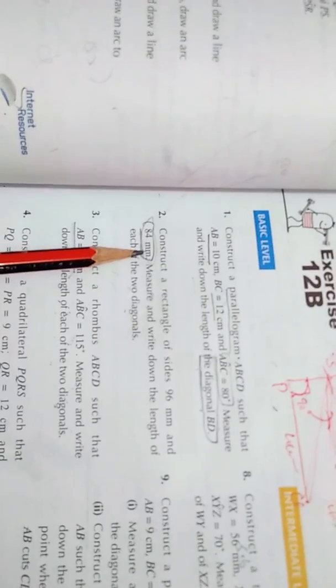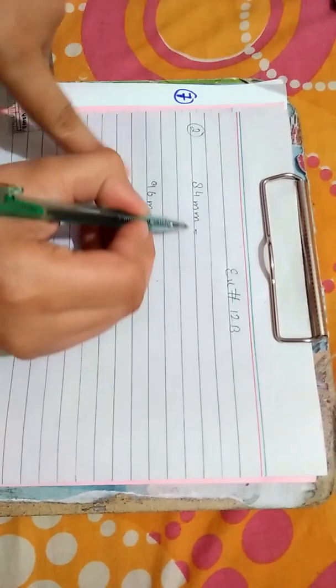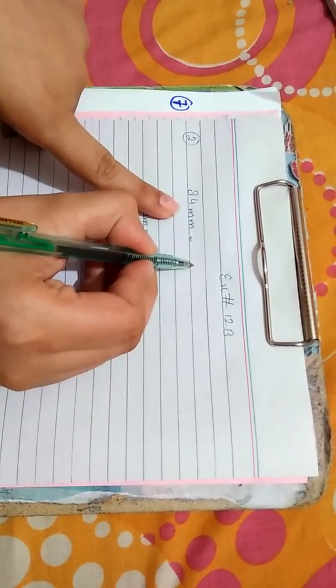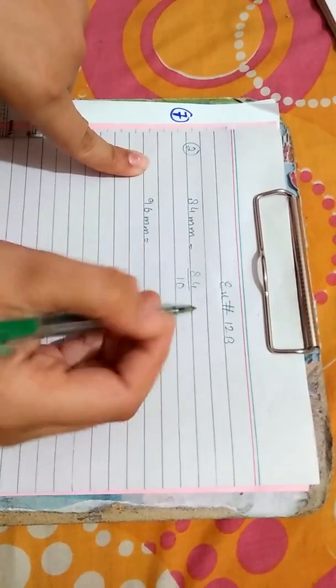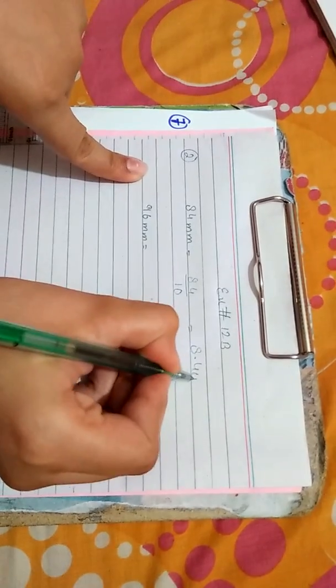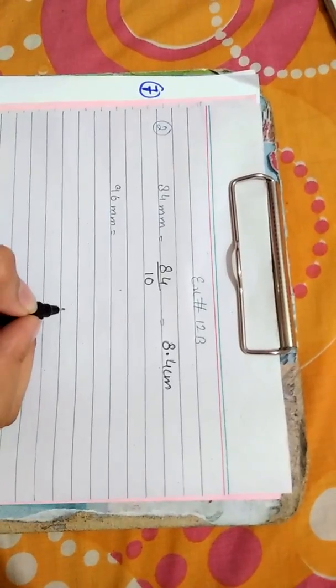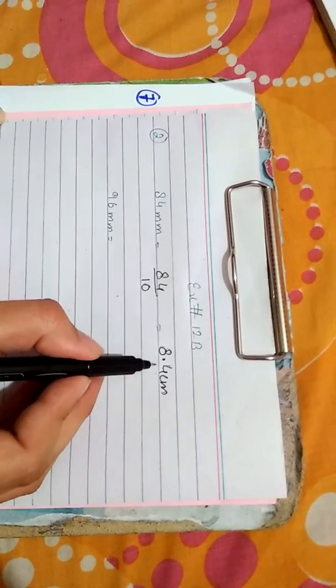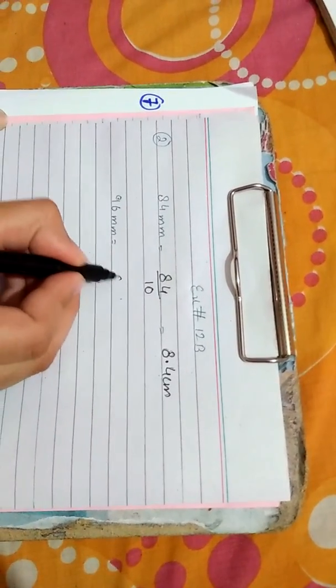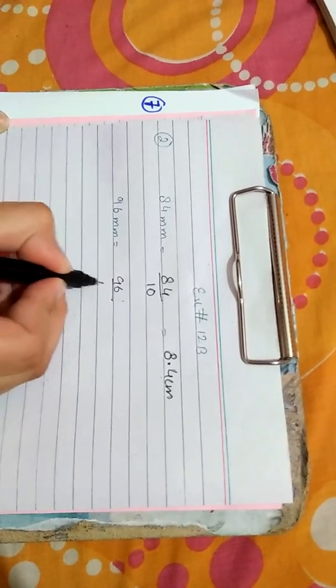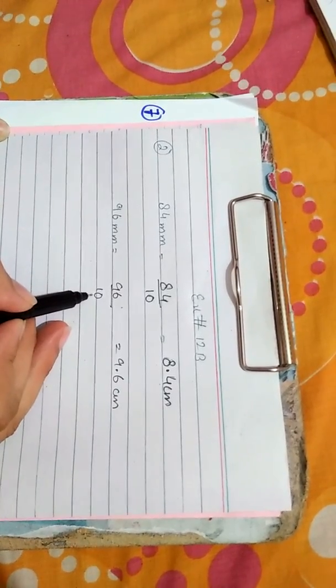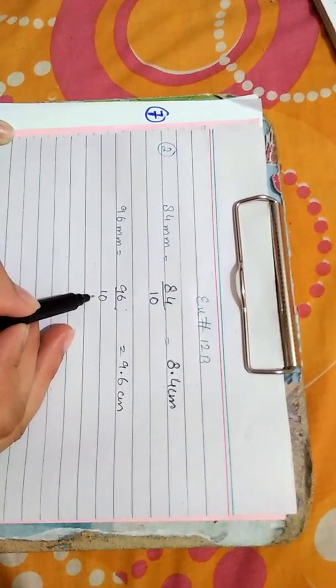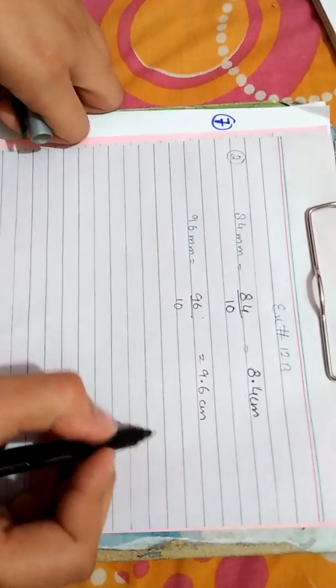Here in the question the lengths are given in millimeter. First of all we will convert millimeter into centimeter. To convert this length from millimeter into centimeter we will divide by 10. So 84 millimeter divided by 10 equals 8.4 centimeter, and 96 millimeter divided by 10 equals 9.6 centimeter.